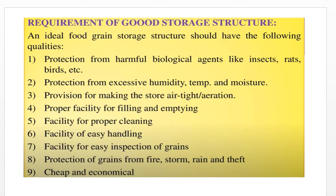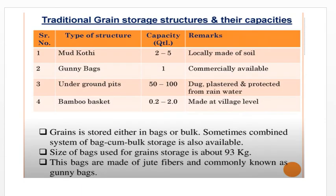Number four, proper facility for filling and emptying; number five, facility for proper cleaning; number six, facility for easy handling; number seven, facility for easy inspection of grains; number eight, protection of grain from fire, storm, and rain; and number nine, cheap and economical storage. These are the requirements of good storage structures.